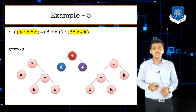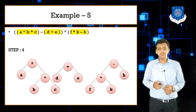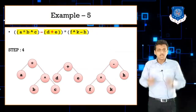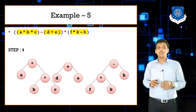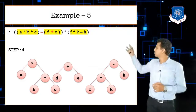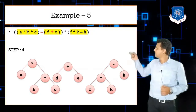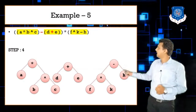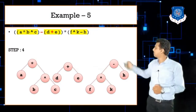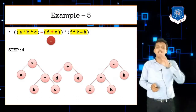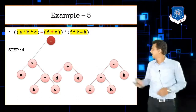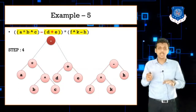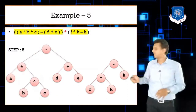Next, solving the first bracket's inner minus: (a * b ^ c) - (d + e). Minus becomes the root, the left link connects to the star node, and the right link connects to the plus node. This forms the sub-tree for the first main bracket.